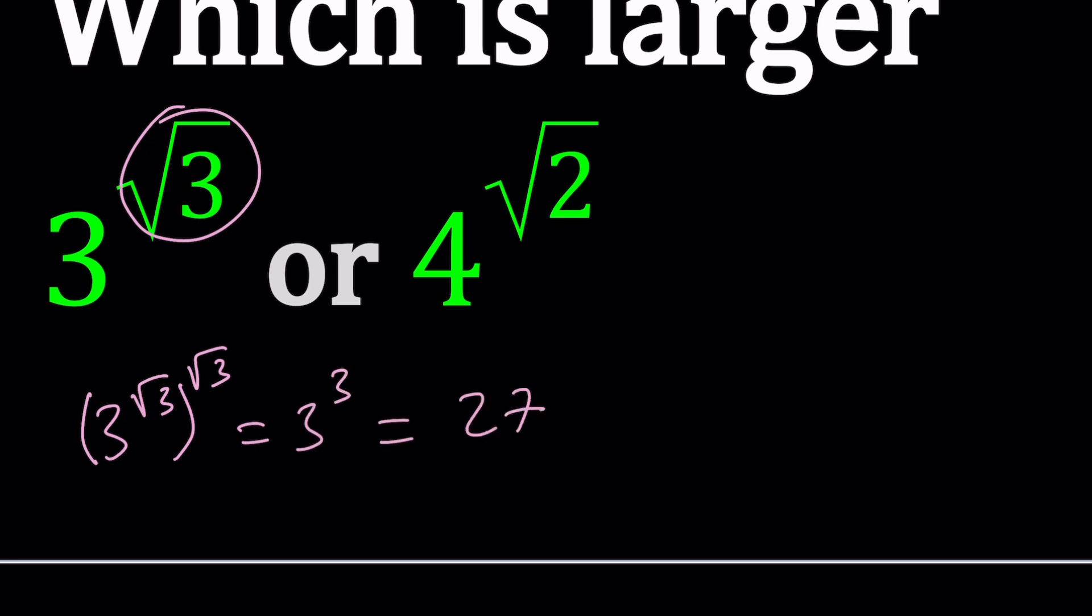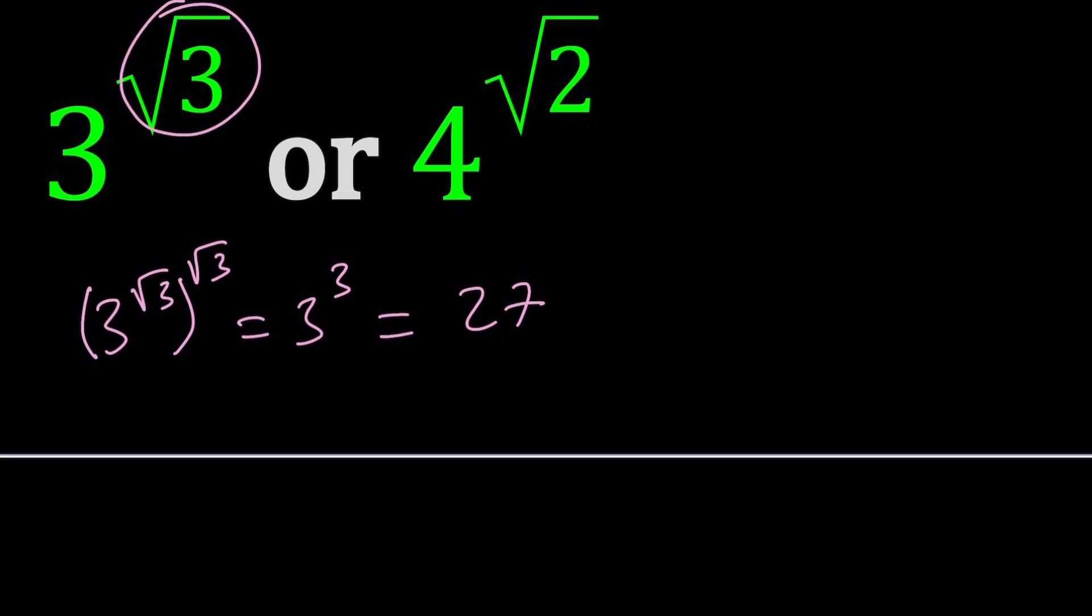You see, whenever they ask you a question—I believe this came up in one of the classes that I was taking, like a proof class—when a and b are irrational, can a to the power b be rational? Absolutely. This is an example and there are many more examples.